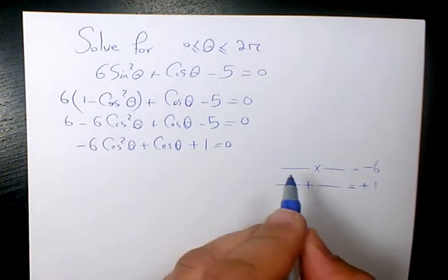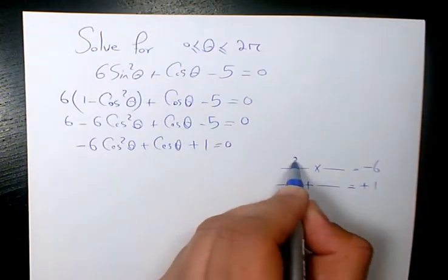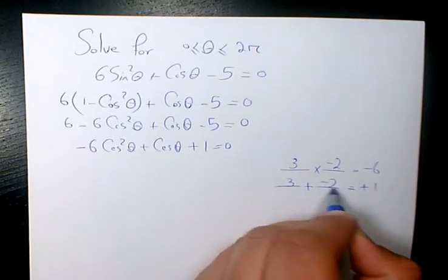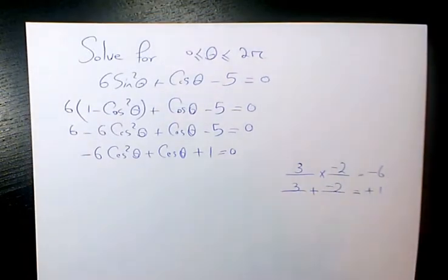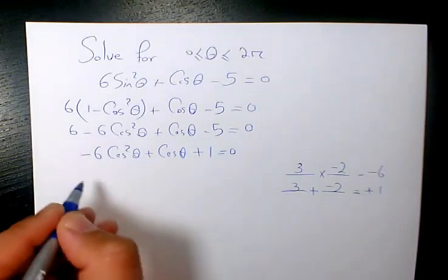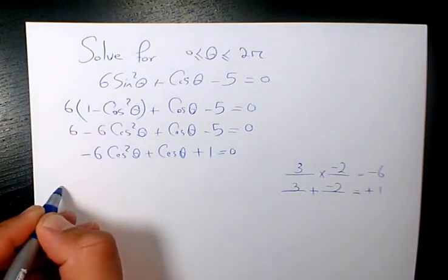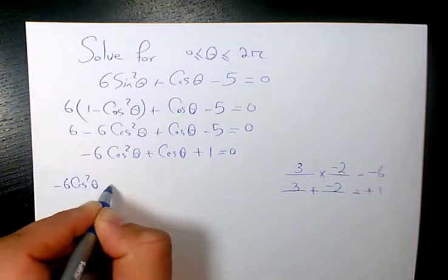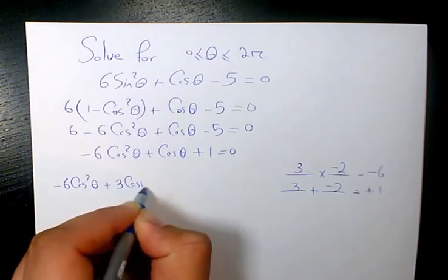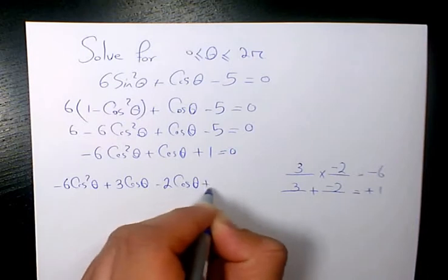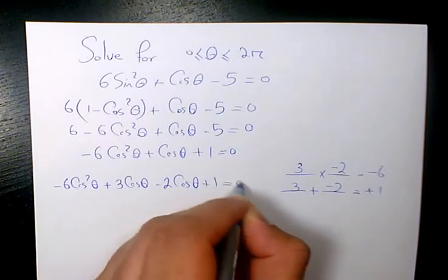I'm looking for two numbers that multiply to negative 6 and add to positive 1. That's going to be 3 and negative 2 — when you multiply them it's negative 6, and when you add them it's positive 1. So I'll rearrange: negative 6 cosine squared theta plus 3 cosine theta minus 2 cosine theta plus 1 equals to 0.